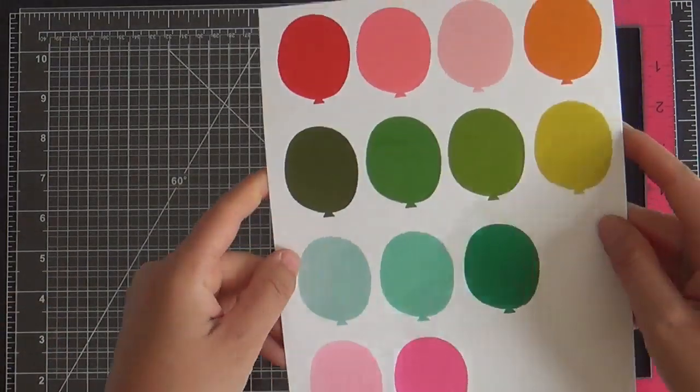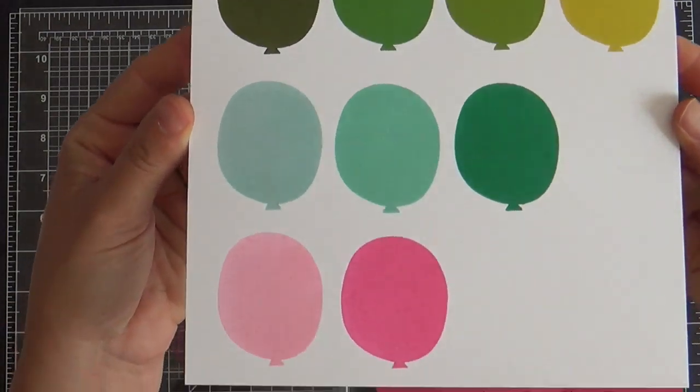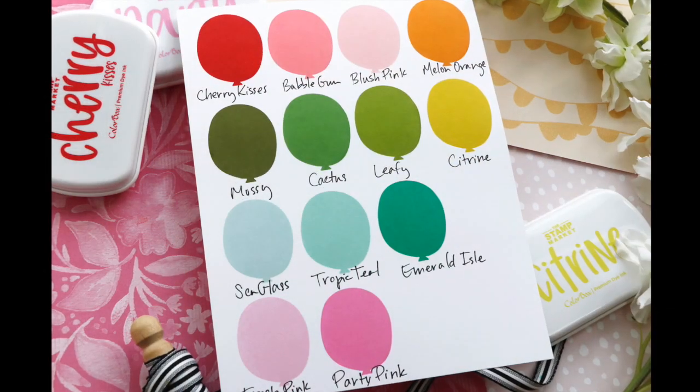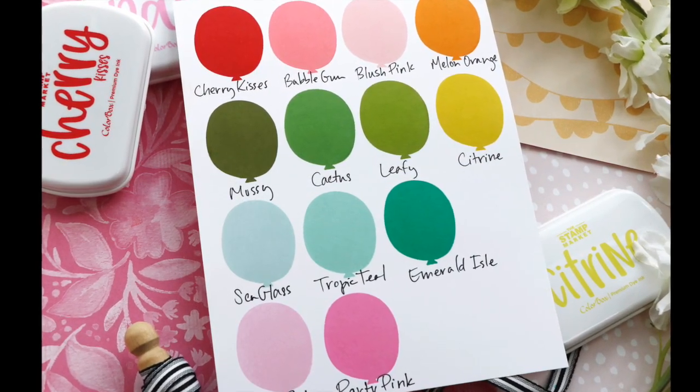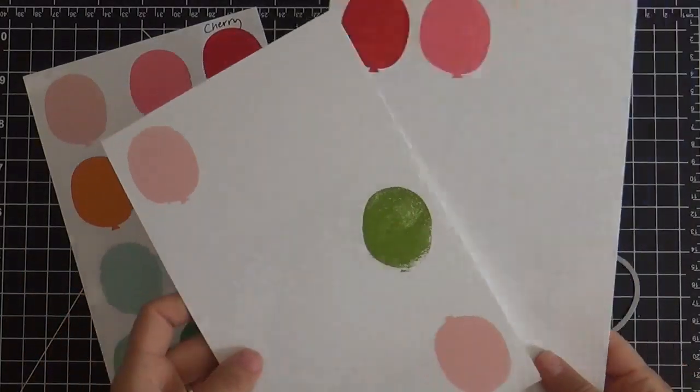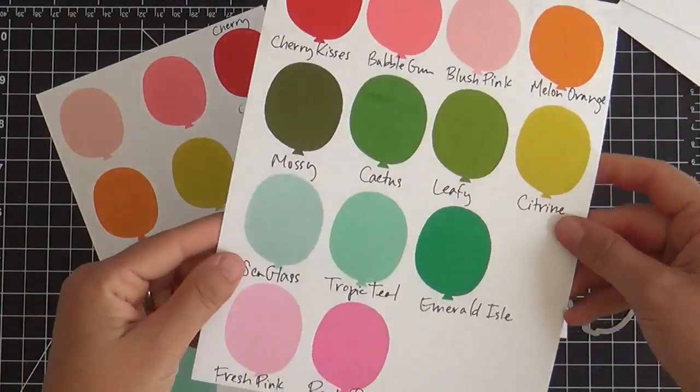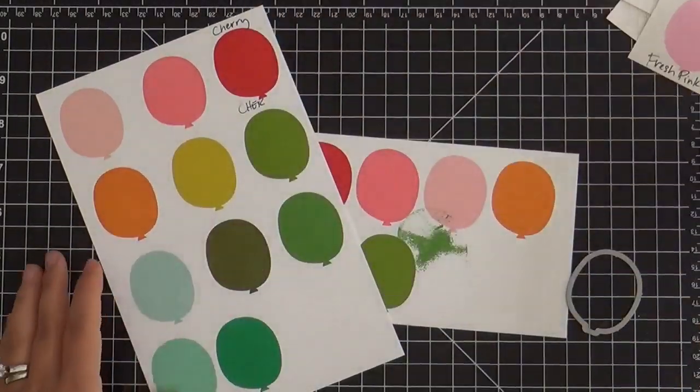I took this off camera, wrote the names of all the inks under the balloons so you can see my little chicken scratch here, but like Cherry Kisses, Bubble Gum... I think one of my favorites is the Citrine color. It's like that chartreuse-y yellow green.